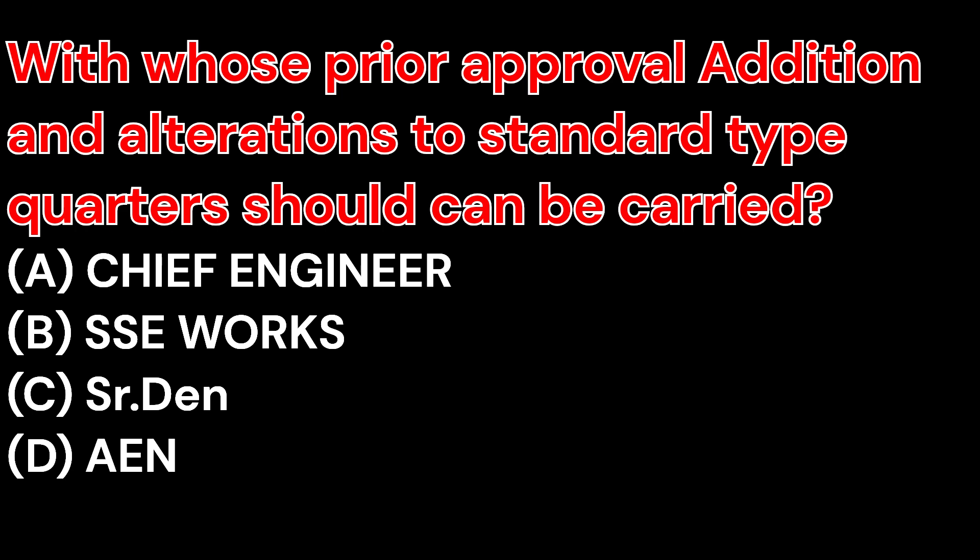With whose prior approval can additions and alterations to standard type quarters be carried out? A. Chief Engineer. B. SSE Pue. C. Senior Divisional Engineer. D. AEN. And the right answer is Chief Engineer.